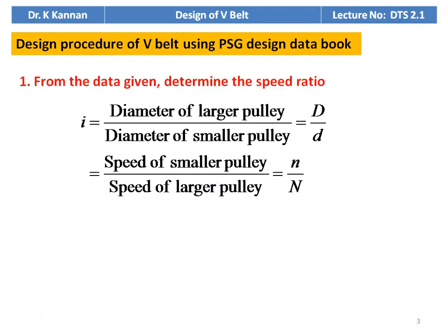First, we have to calculate from the data given. Write down the given data from the problem — read the problem carefully and note the given data. Then from the given data, determine the speed ratio. Speed ratio i = D/d (diameter of the larger pulley divided by diameter of the smaller pulley) or n/N (speed of the smaller pulley divided by speed of the larger pulley).